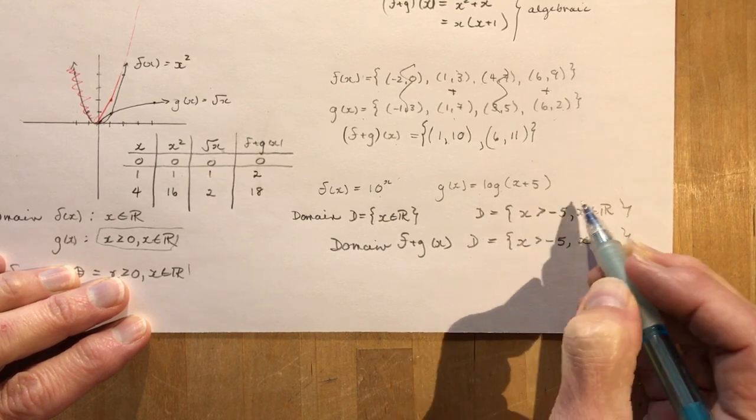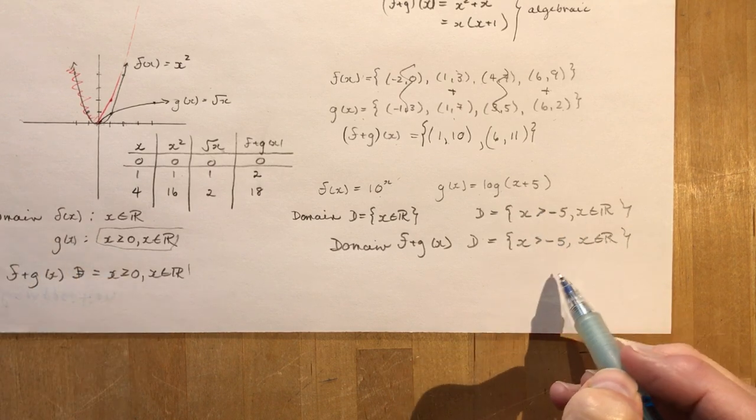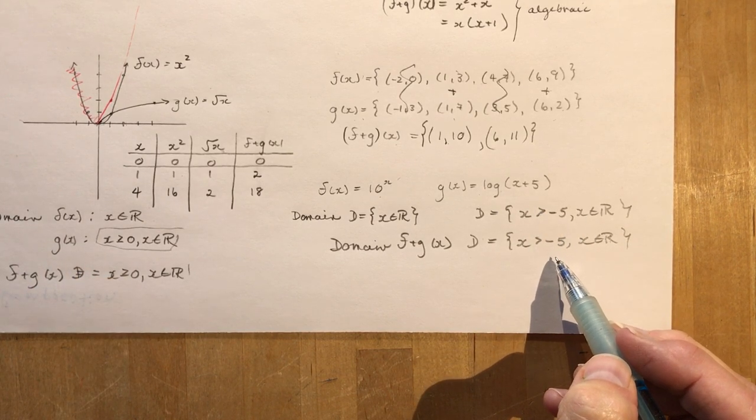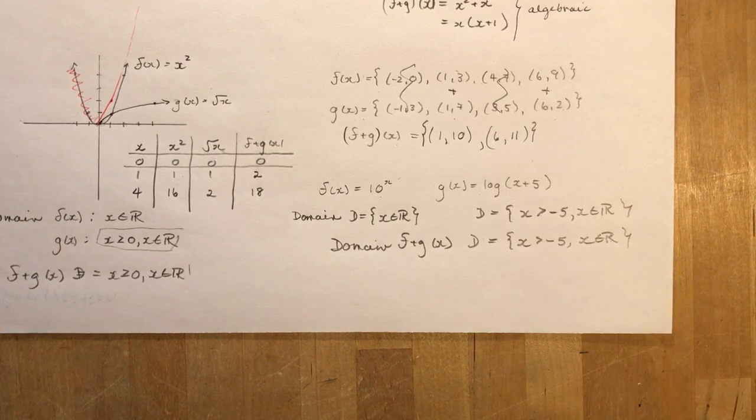So that's where they would overlap. This is all of the numbers, but this is only numbers greater than negative 5. So the function, the combined function must be greater than negative 5. And that's about it for 9.1, 9.2.